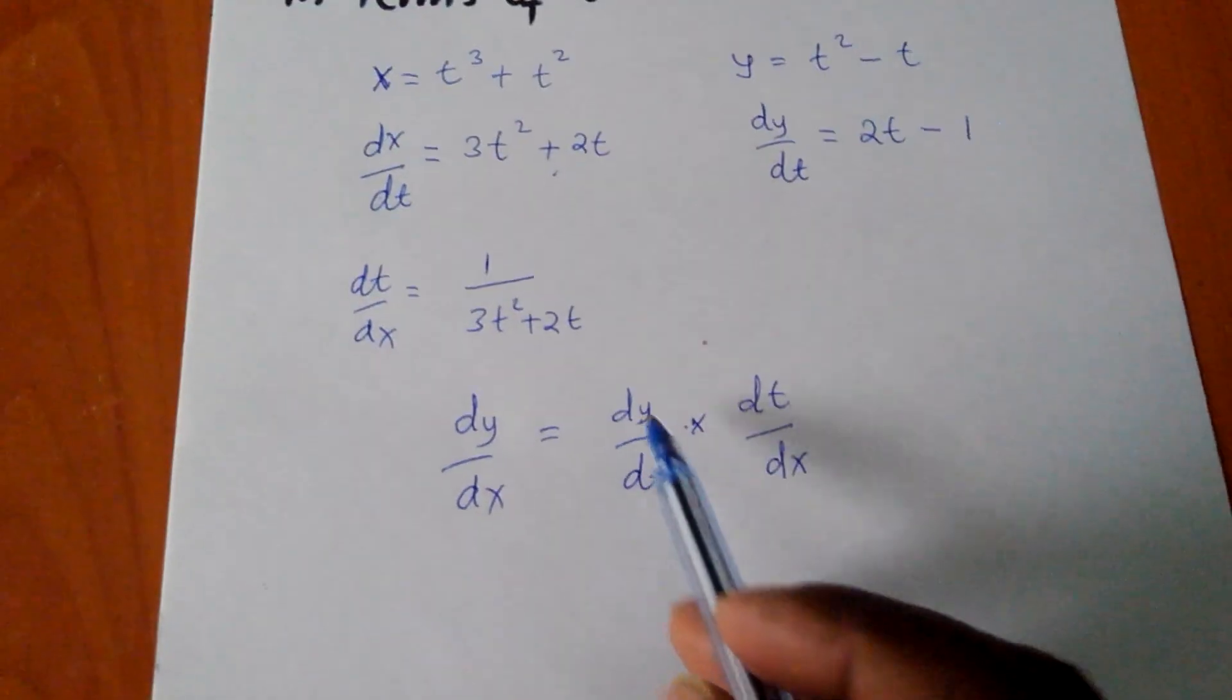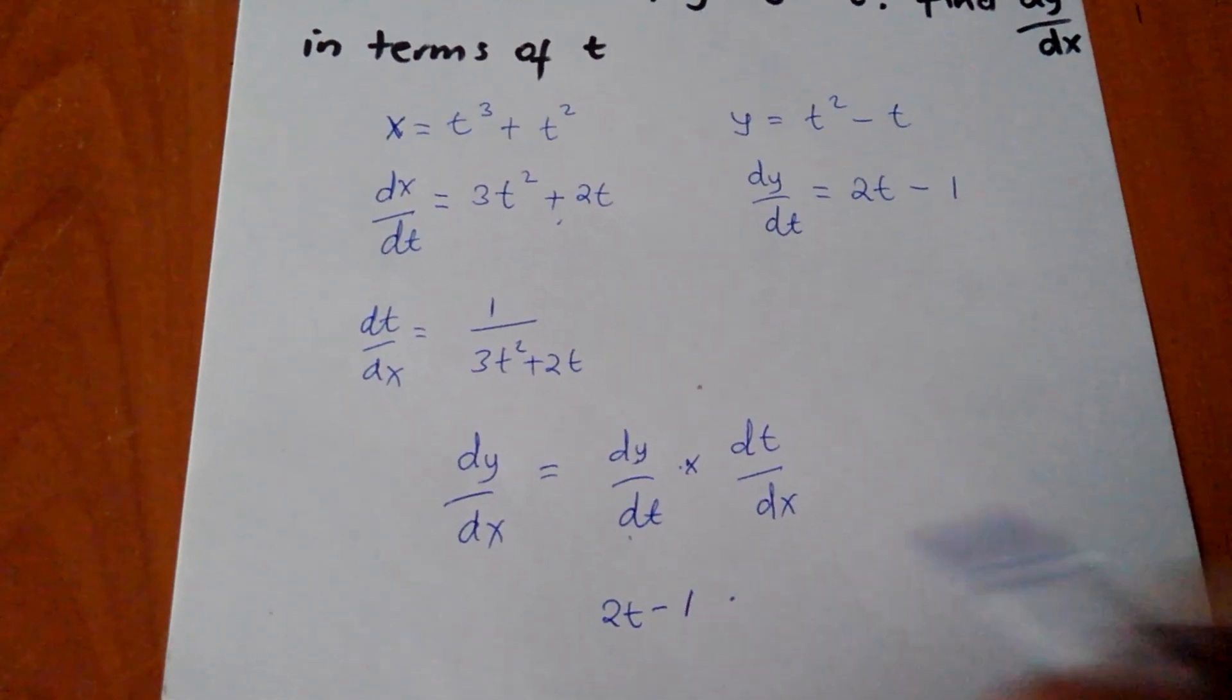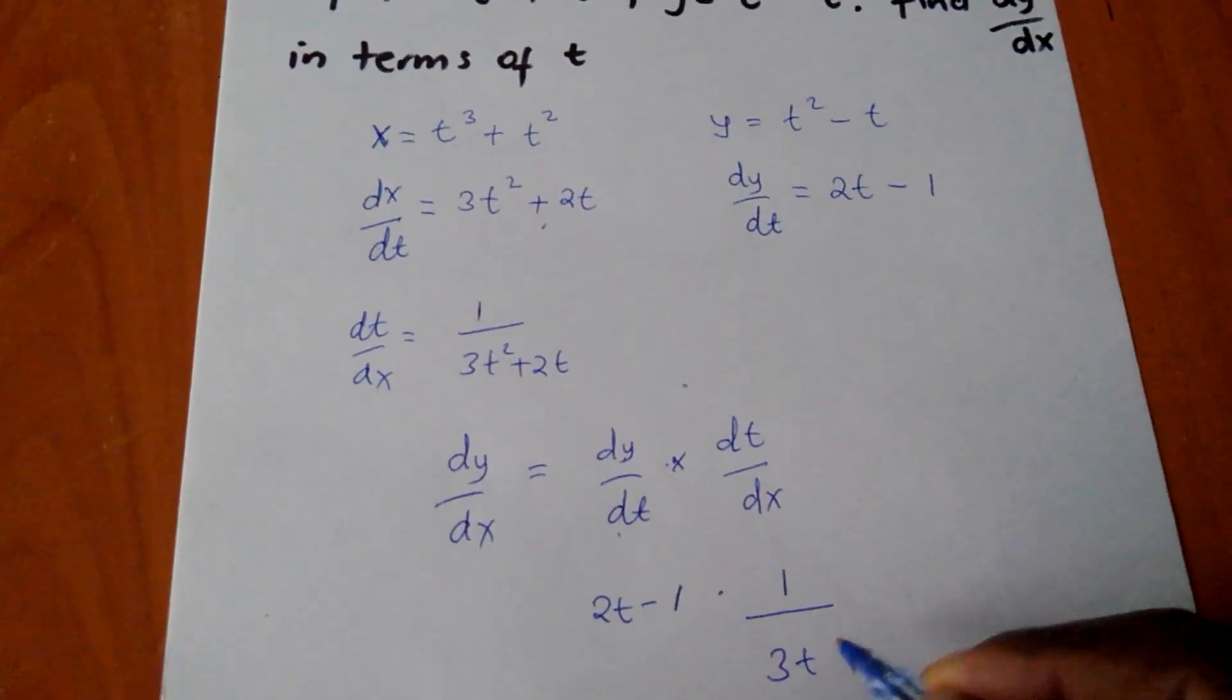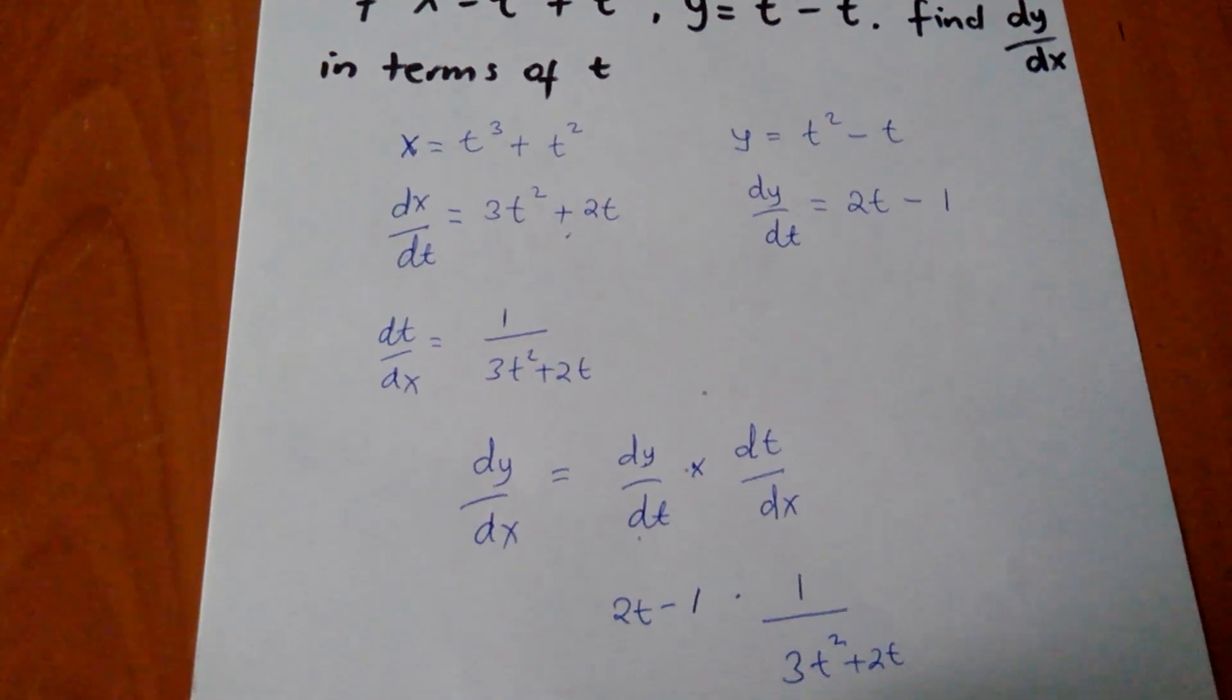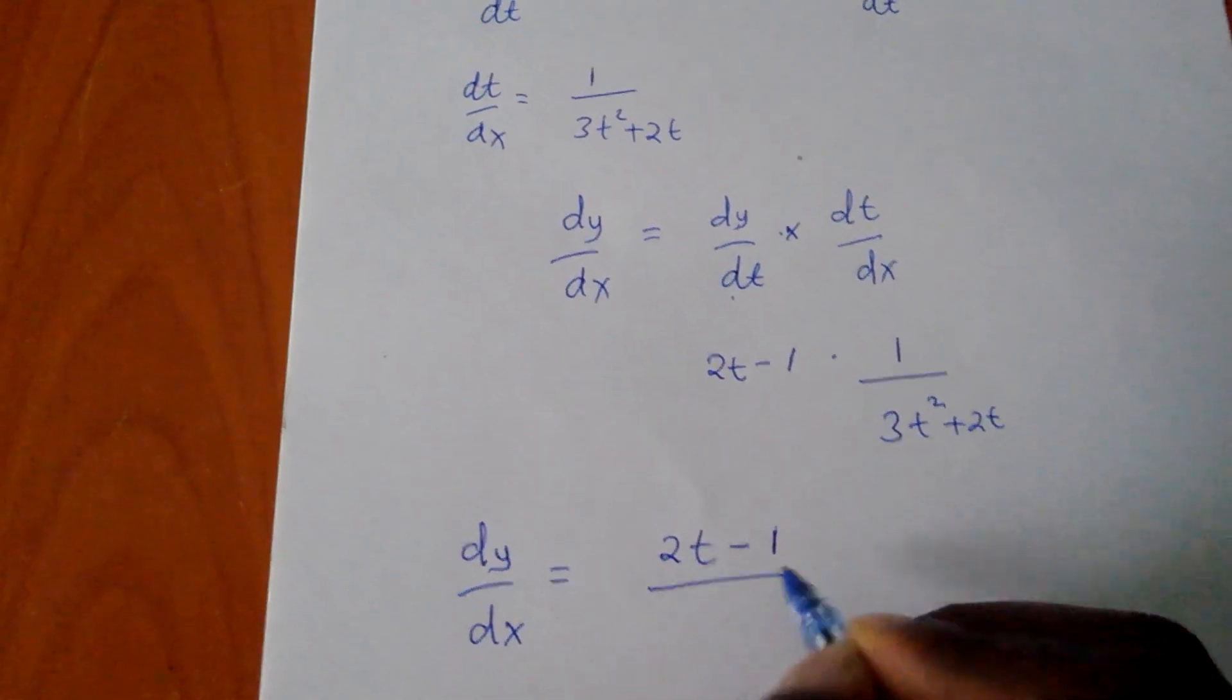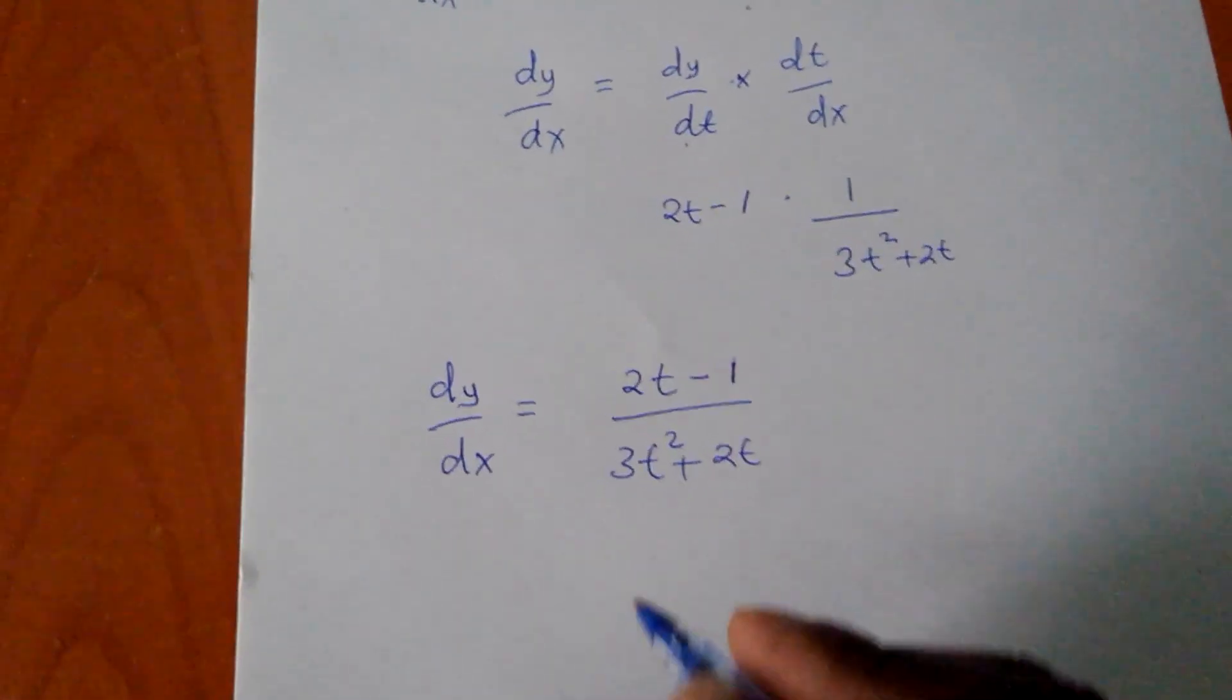So my dy/dt, I already have it here, which is 2t minus 1, times dt/dx, of which I already have here, which is 1 over 3t squared plus 2t. So my dy/dx will equal to 2t minus 1 over 3t squared plus 2t, of which you can go further and simplify.